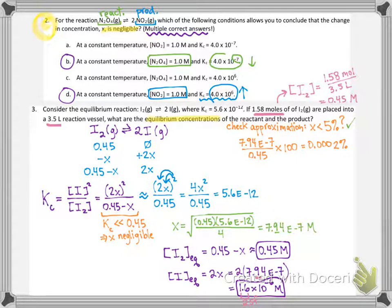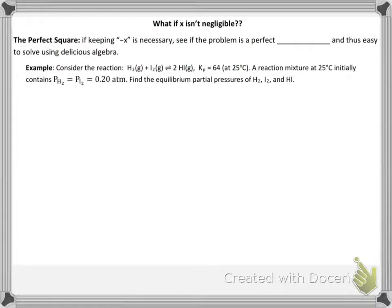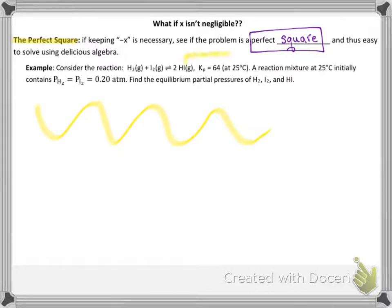It is true you will not always be able to use the x is negligible approximation — on Mastering Chemistry they may even ask you to use the quadratic formula. However, there is another trick that shows up on the AP Chem test that can help you avoid the quadratic equation — it's called the perfect square. Basically, you're trying to find a setup where you can take the square root of both sides to get rid of the x² term. Set up your RICE table and plug in for your equilibrium constant expression — you have all the skills to do it.